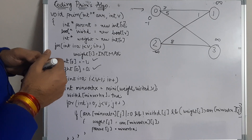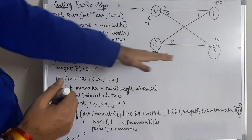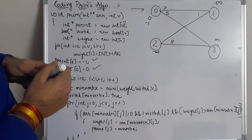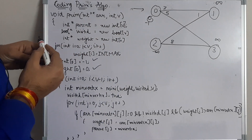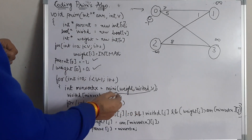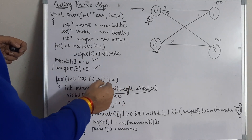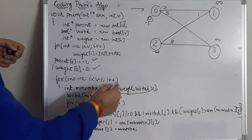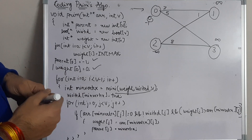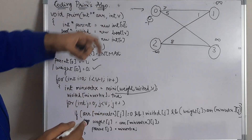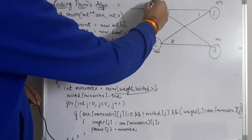For the remaining V minus 1 vertices, we compute the minimum weight vertex. Since we initialized weight 0 for node 0, we get vertex 0 first. We use a min function to find the minimum weight vertex — let's assume we get index 0 with minimum weight. We then mark vertex 0 as visited.